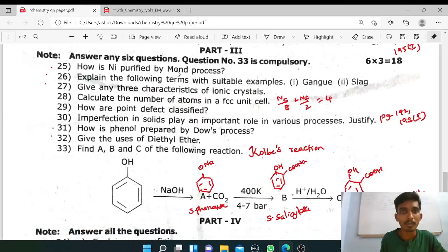Next is the three mark. Mond's process, very easy question. Gangue and slag is the three mark, so definition plus one example, very easy. Characteristics of ionic solid, sixth lesson, so three characteristics.